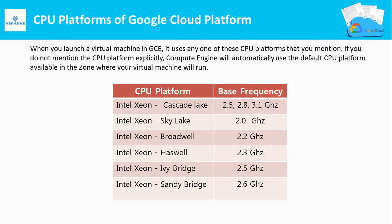Next are the CPU platforms of Google Cloud Platform. When you launch a virtual machine in GCE, it uses one of the available CPU platforms. If you do not specify a CPU platform explicitly, Compute Engine will automatically use the default platform available in the specified zone. All the CPUs are based on Intel Xeon processors, with processor types including Cascade Lake, Sky Lake, Broadwell, Haswell, Ivy Bridge, and Sandy Bridge, each with different base frequencies.